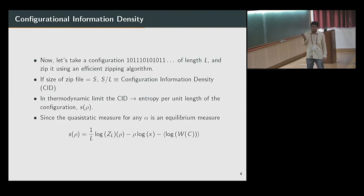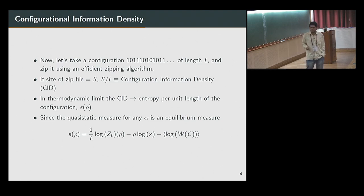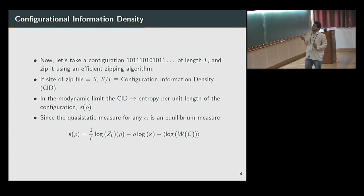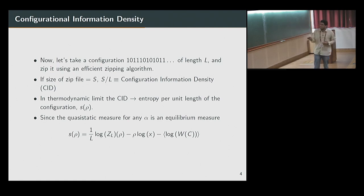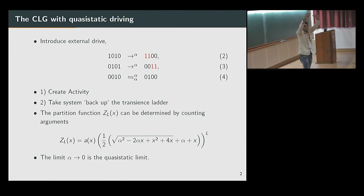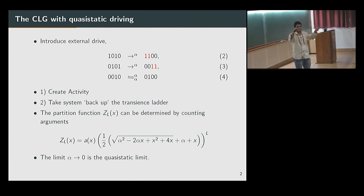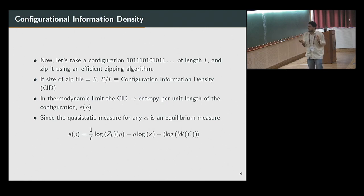There's another quantity called the configurational information density, or computable information density (CID), which has become very important in jammed and glassy systems. Take a given configuration of length L and use an efficient zipping algorithm to compress it. The compressed file contains how much information is needed to recreate this configuration. If the size of the zip file is S, then S divided by L is called the configurational information density. In the thermodynamic limit, for normal systems you'd expect the CID to approach the entropy per unit length S(rho). The measure on the transient ladder — alpha, alpha squared, alpha cubed with everything on one rung equiprobable — is an equilibrium measure that obeys detailed balance, so you can use normal tools from equilibrium statistical mechanics to calculate the entropy per unit length.